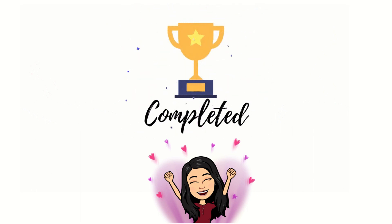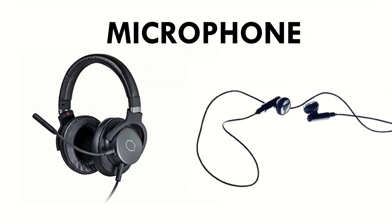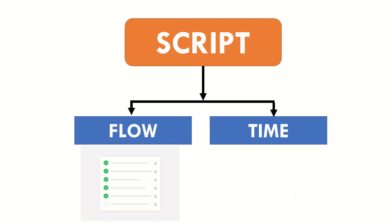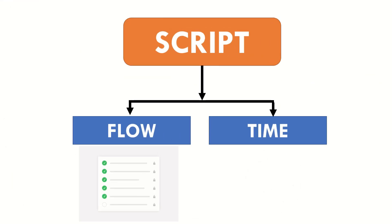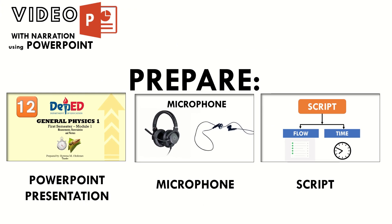Next, you also need to prepare your microphone. Right now, what I'm using is from my cell phone. If you have an external microphone, then that would be great. You need to prepare your script as well. You need to consider the flow and the time — you need to be very sensitive. So if you have these, then that means you are ready to record.